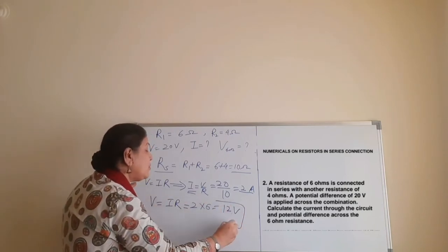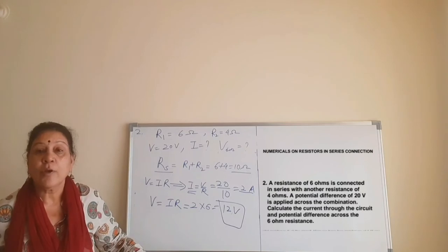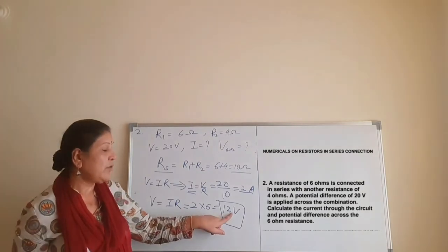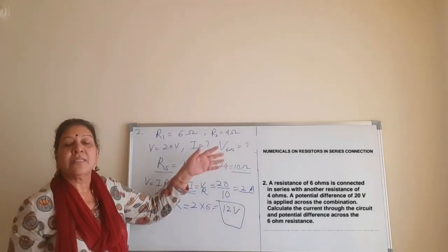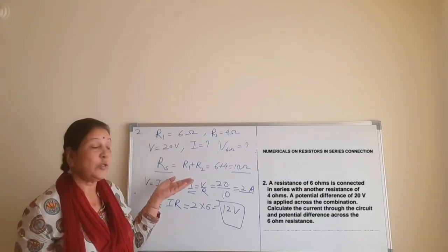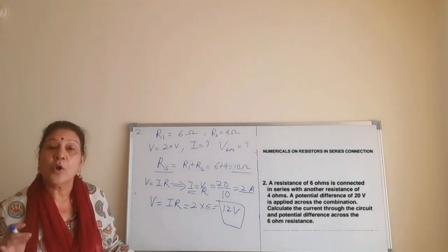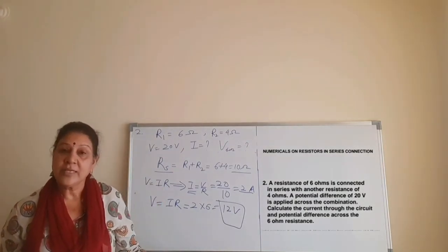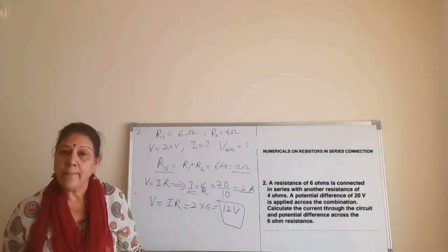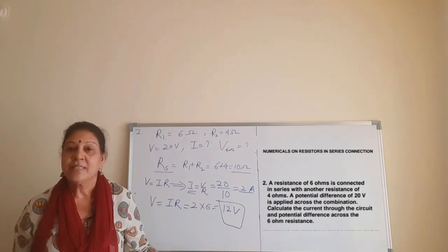Always remember to write the unit for whatever physical quantity you are finding — it is very important; if you don't write the unit you will lose marks. Try to write in a clear manner so it's easy to see what is given and what is not. So we have solved two numericals based on series circuits. We will be solving numericals based on parallel circuits and combinations of series and parallel next. That's all for today — stay safe, stay healthy, and a very big thank you to you all. Bye-bye.